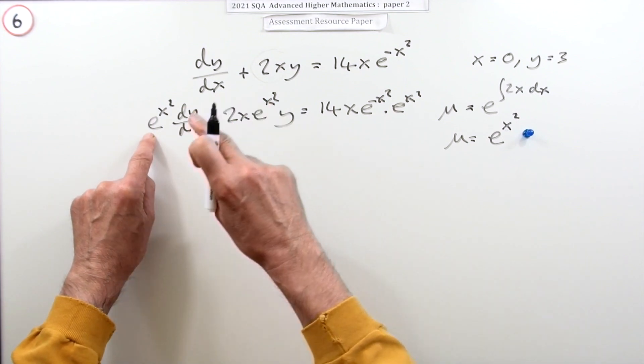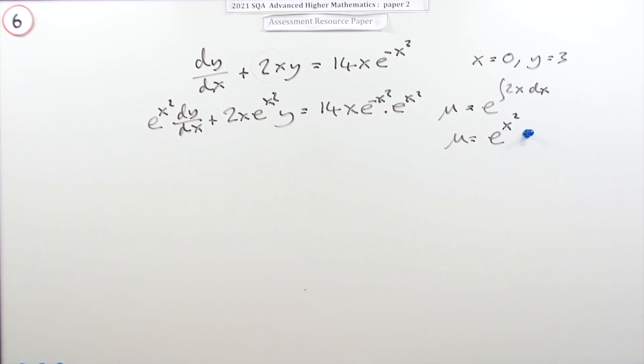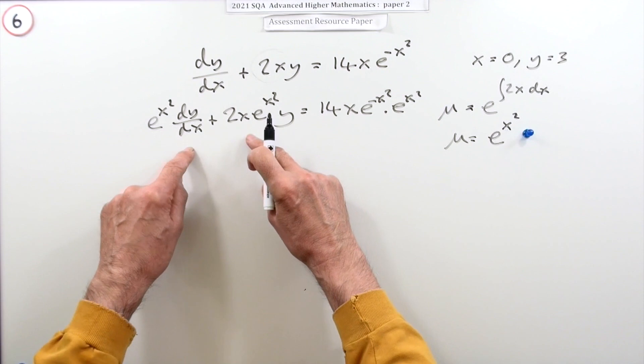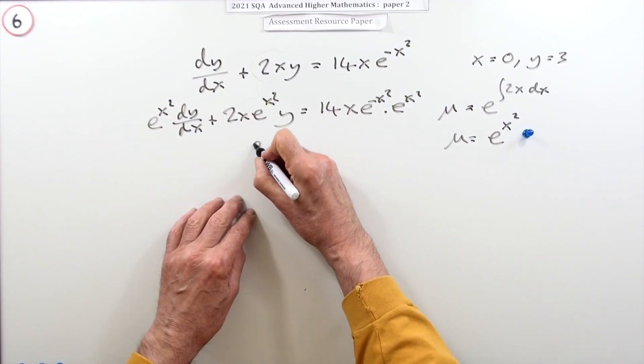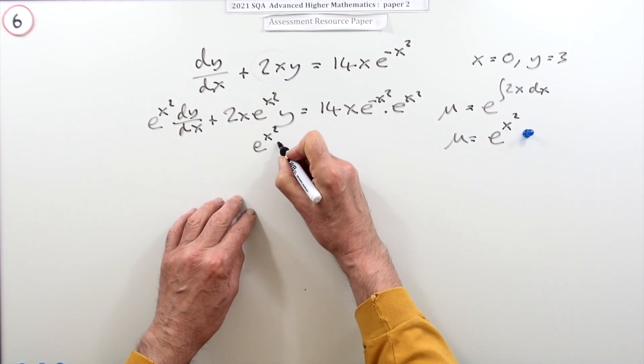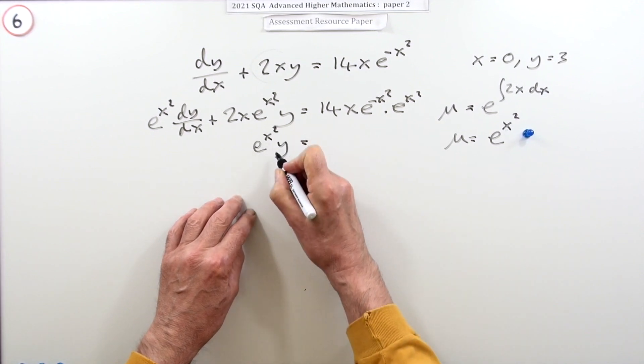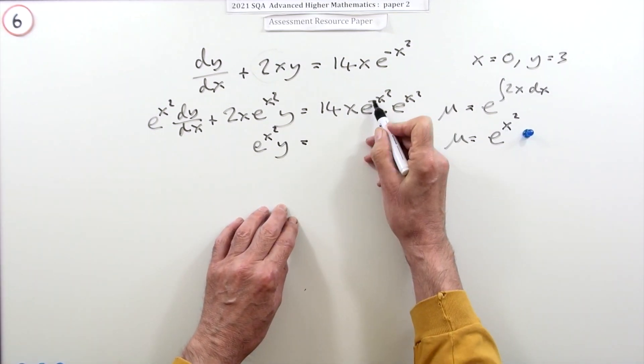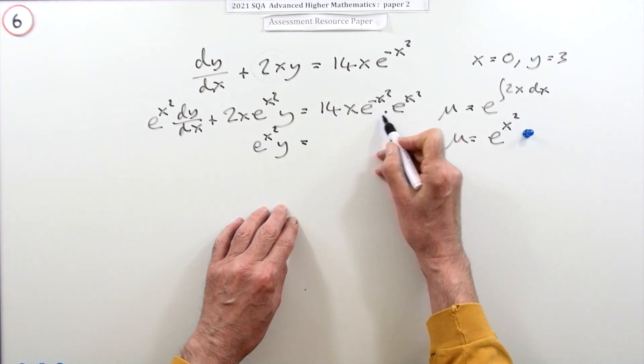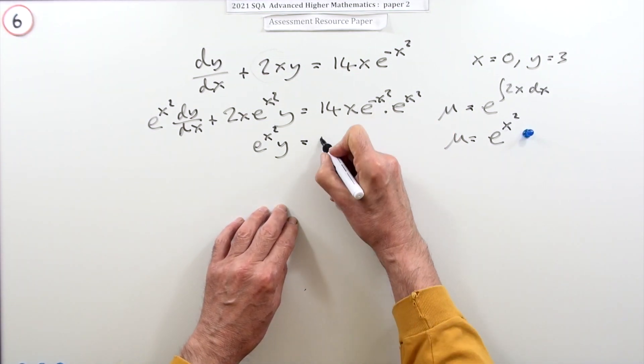Now integrating both sides, that'll just pop back to where it came from, so e to the x squared y. Now integrate this, this is very handy. They cancel out so that just becomes one, so I've just got 14 times integral of x dx.